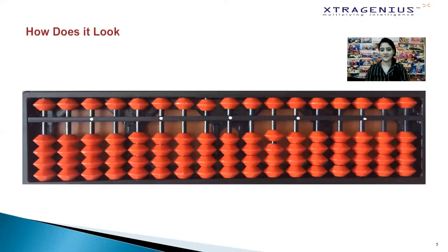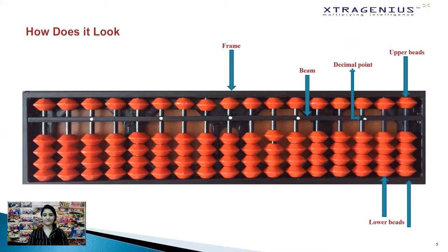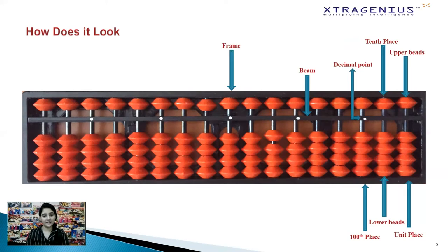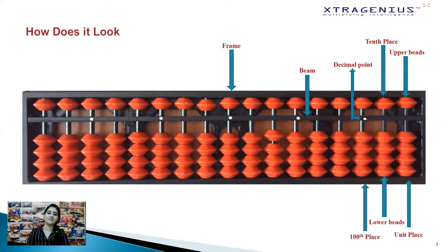Here's how an Abacus looks. There's a beam in the center and beads above and below it, fittingly called the upper and lower beads respectively. The second thing to focus on is the designation of the units place, the tens place and the hundreds place. The first rod from the right is the units place, the second is the tens place and the third rod from the right is the hundreds place. Things will get clearer once we start counting numbers and solving problems on the Abacus.